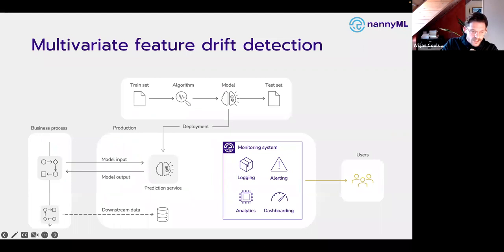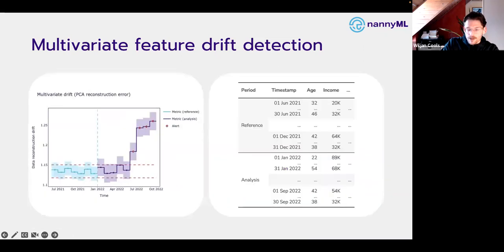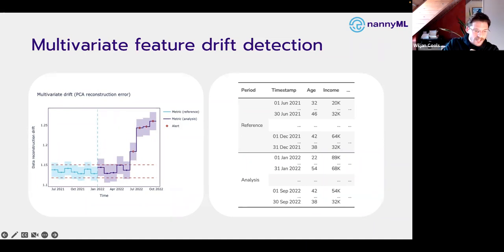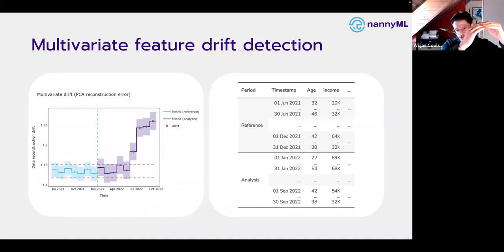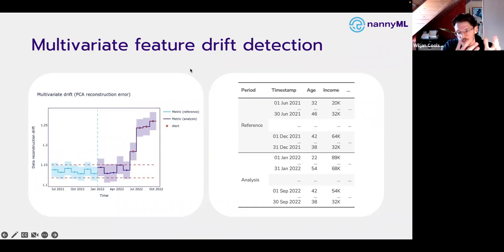We can also do multivariate data drift detection, which follows the same approach: we pick the features that go into the model in production and compare them to the features in the test set. We've developed an algorithm based on PCA: we take the reference data, take all features, fit a PCA object, push the data through compression and decompression so the data recreates itself, then measure the reconstruction error. When applied on the same data structure, this error is very low; but when data structures and relationships are changing, the error increases — a clear sign the dataset is fundamentally different.